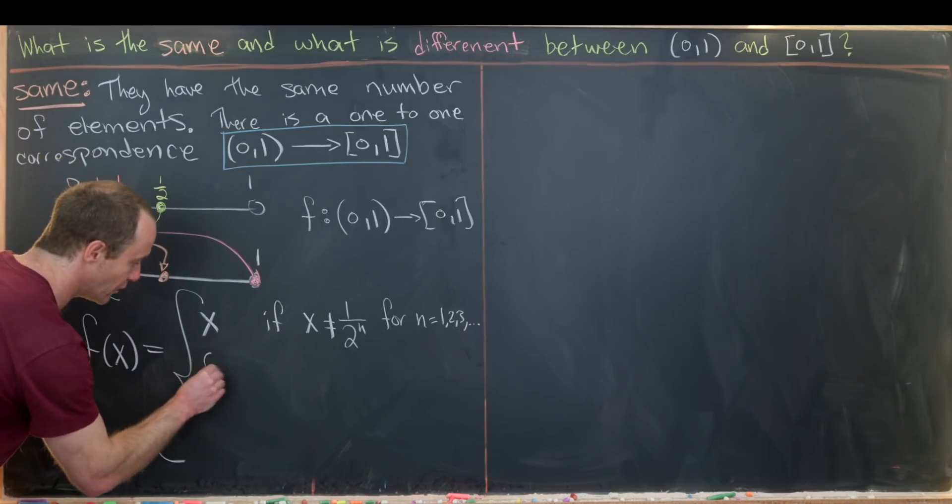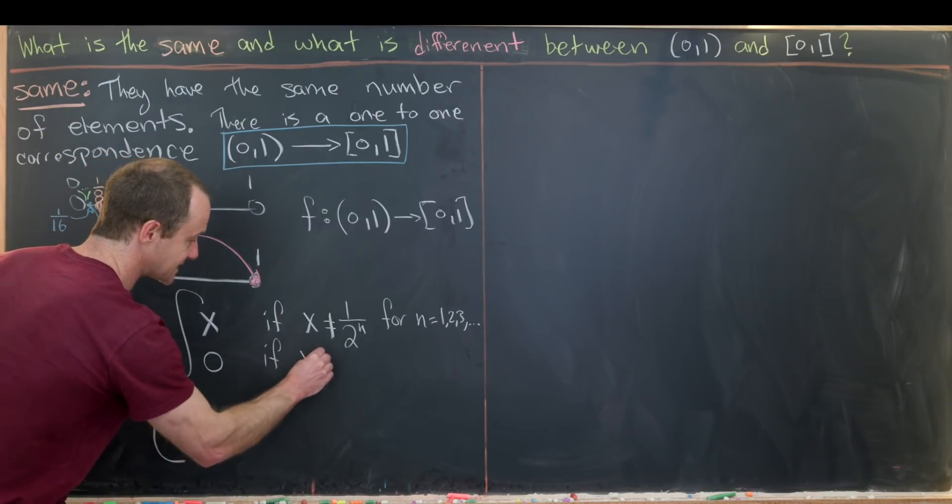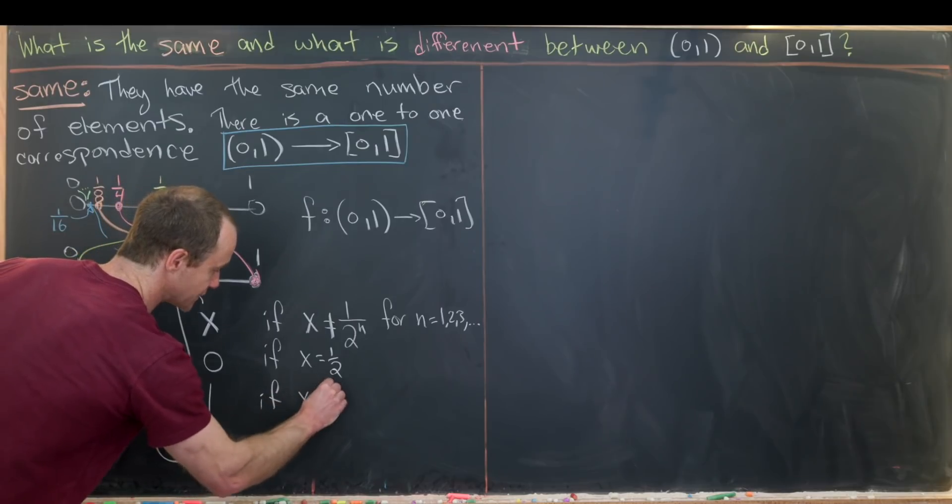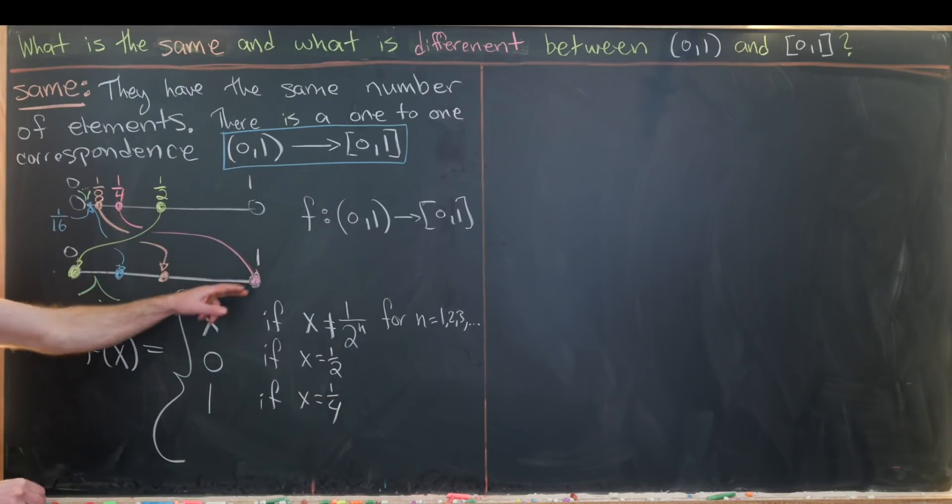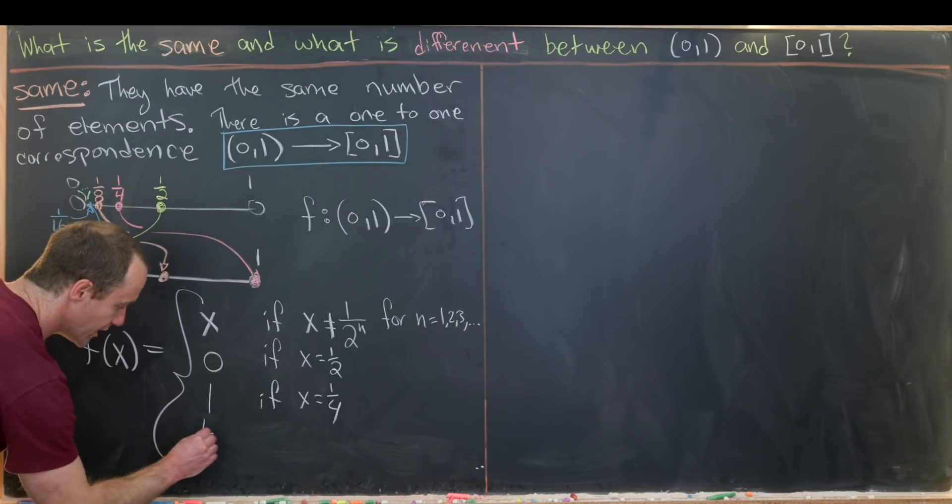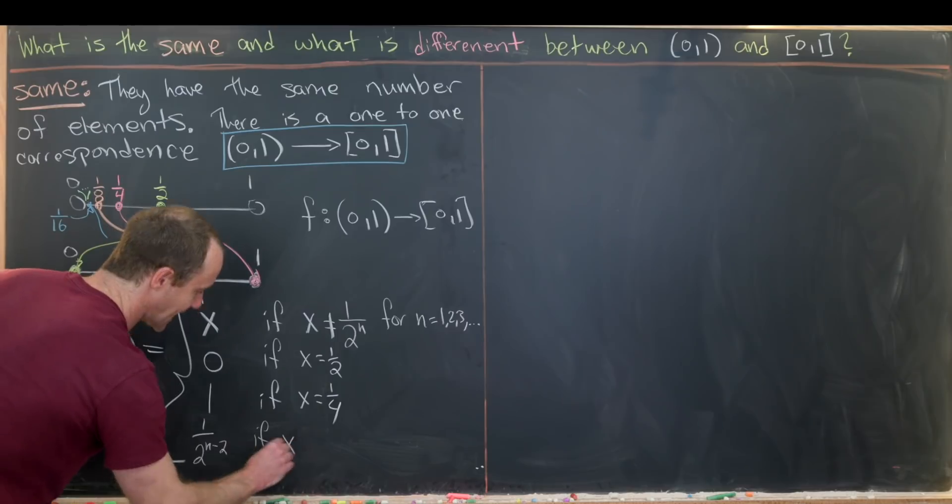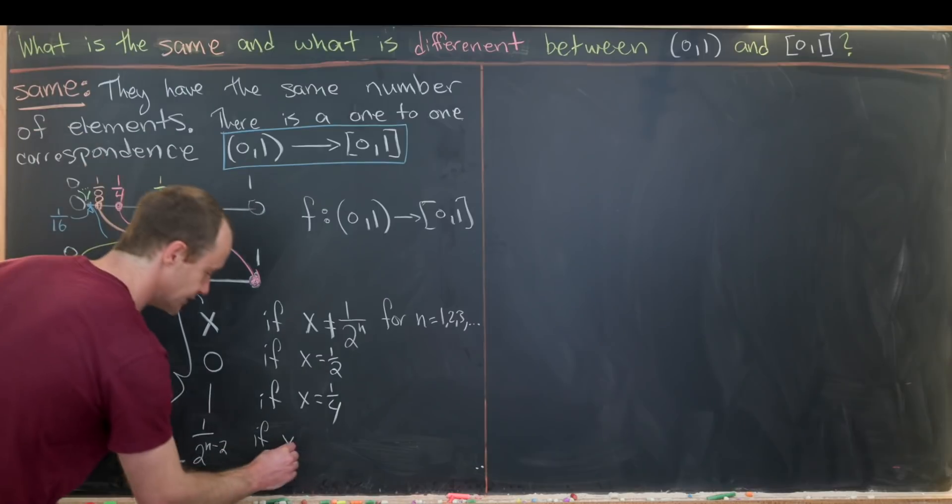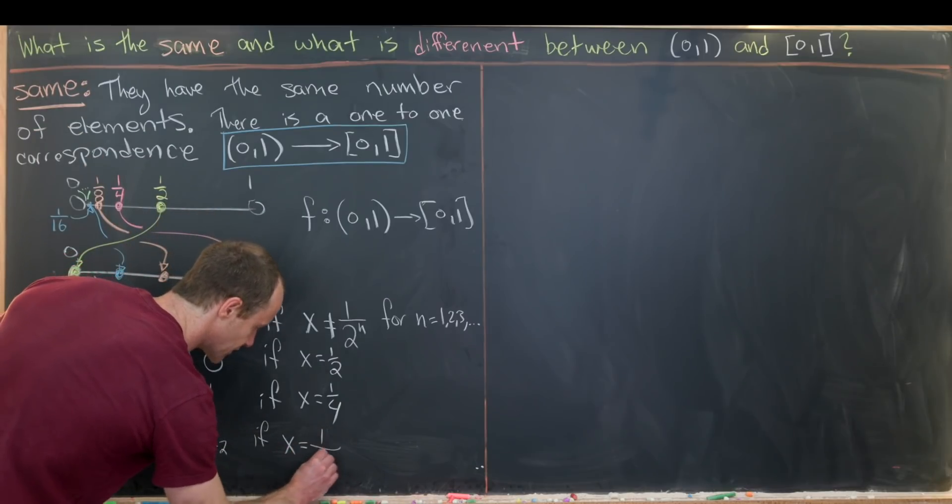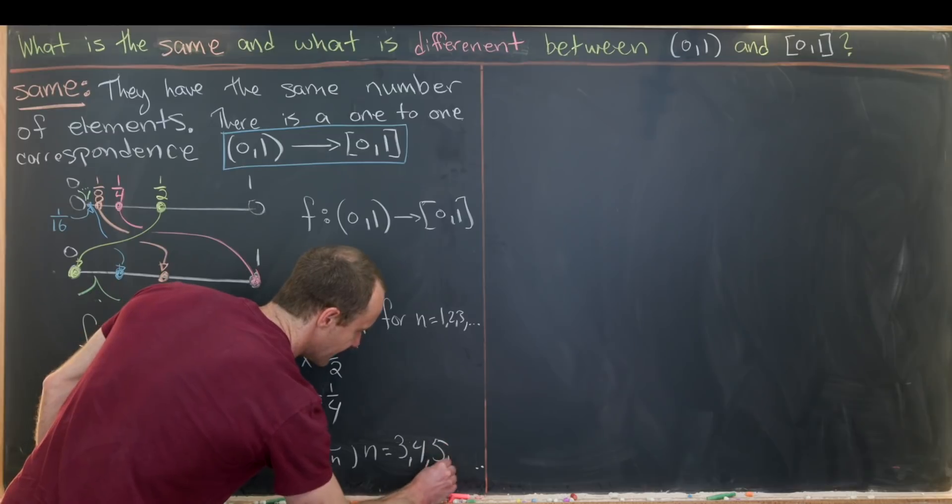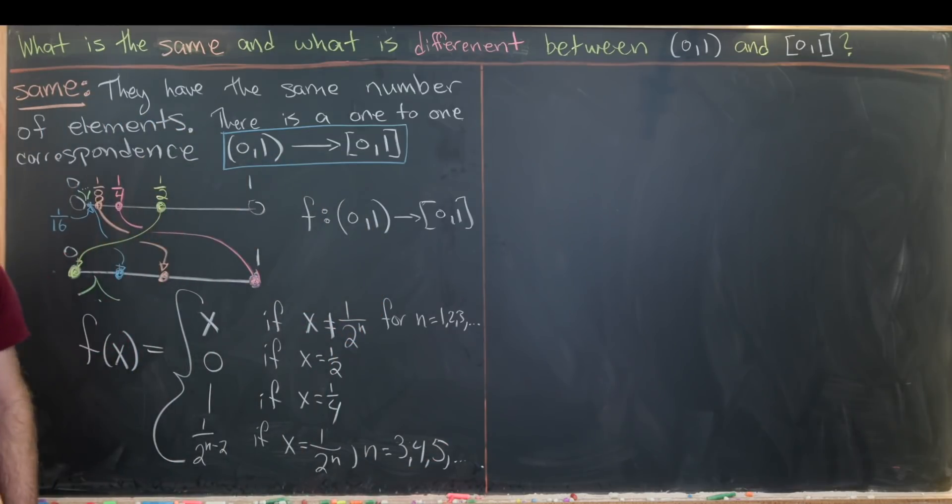And then our output will be the number 0 if x equals 1/2. And so that's exhibited by this yellow line. Our output will be the number 1 if x equals 1/4. So that'll be this pink line. And then 1 over 2^(n-2) if x is one of these other reciprocals of powers of 2. So let's say 1 over 2^n where n is equal to 3, 4, 5, dot dot dot. So all natural numbers bigger than or equal to 3.